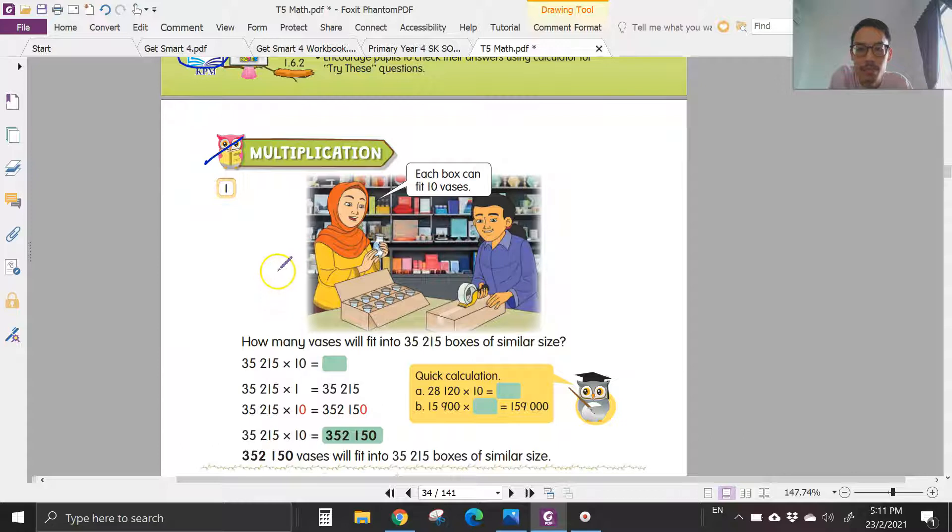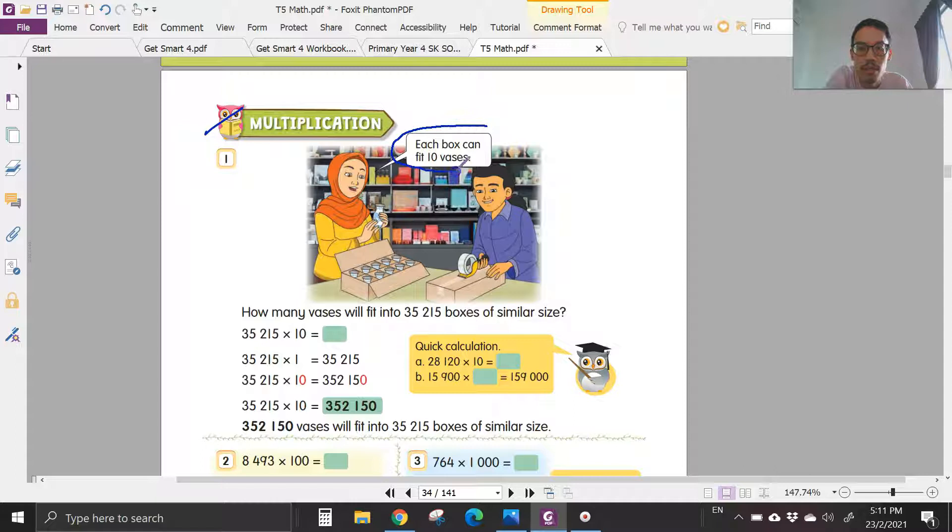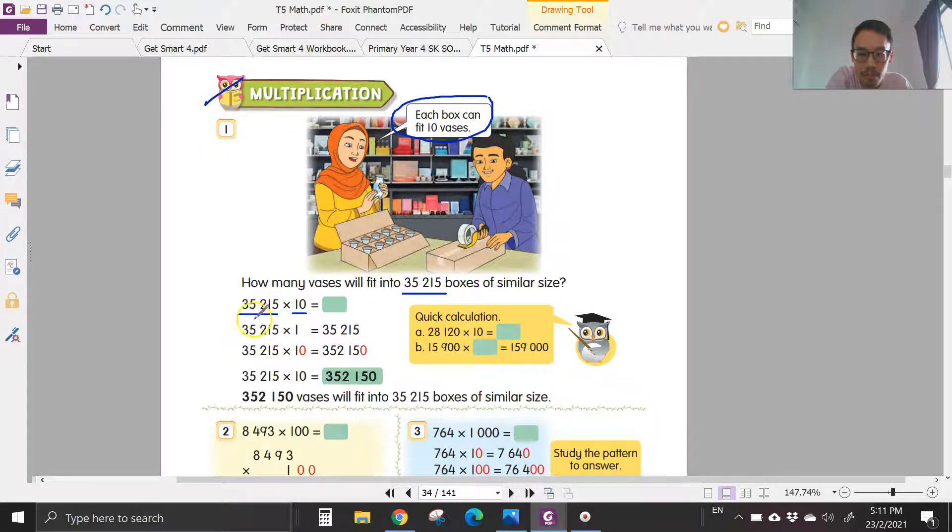Let's look at some examples here. Each box can fit 10 vases. How many vases will fit into 35,215 boxes of similar size? So you have 2 times 10. Times 10 is very easy, you just copy the number over there. 35,215 times 1 you get the same number, and then times 10 there's an extra zero, so you just add an extra zero behind.